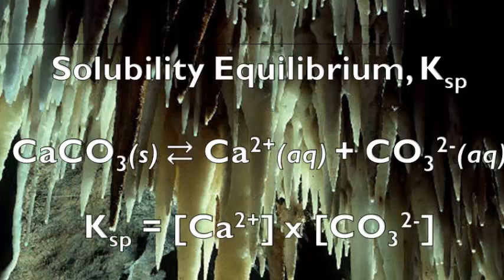If we were to write a KSP for this, it's similar to the K expressions we wrote before. We call it KSP because it's specifically the solubility product constant. We're multiplying the two soluble ions together — the calcium ion and the carbonate ion. Remember, we do not include solids when we write a KSP expression.